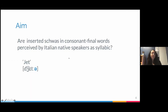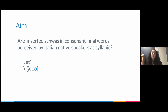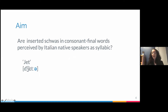The aim of the talk is to answer the following questions: Are inserted schwas in consonant-final words perceived by Italian native speakers as syllabic? When I talk about schwas — because schwas are not really a phoneme in Italian — I talk about when Italian speakers say something like 'GET', the E sound at the end of consonant-final words.